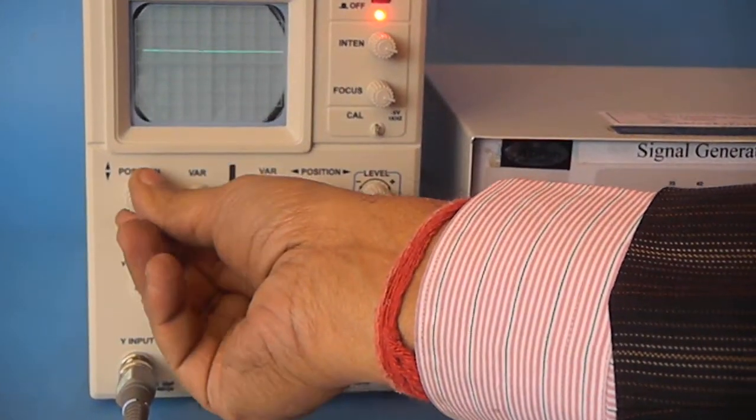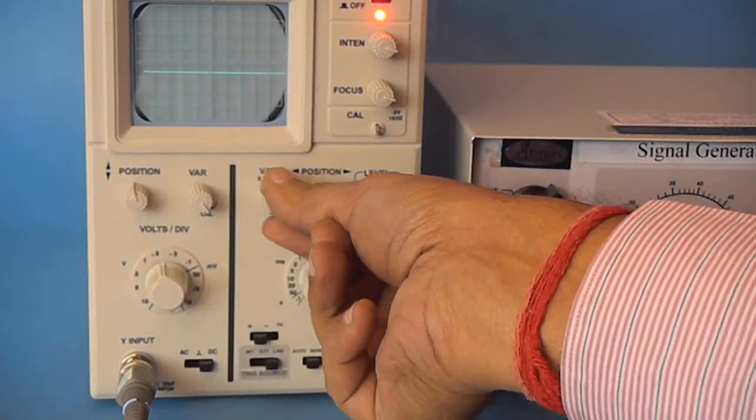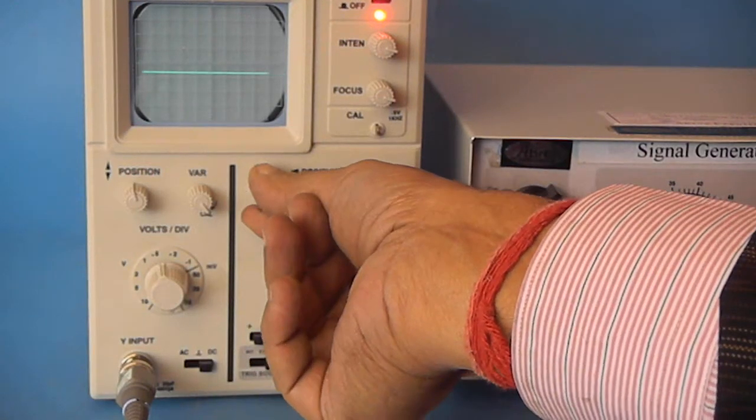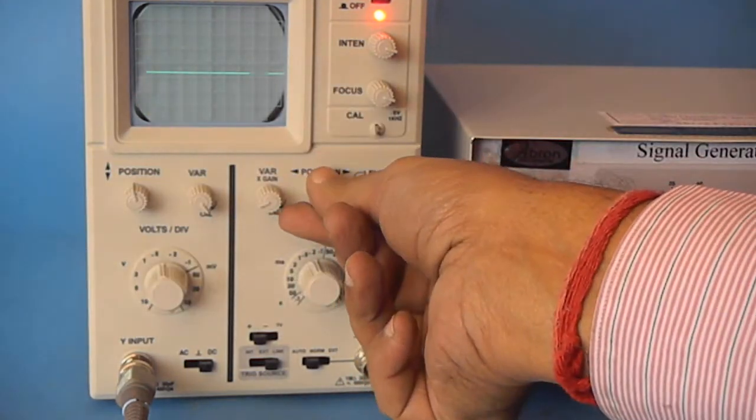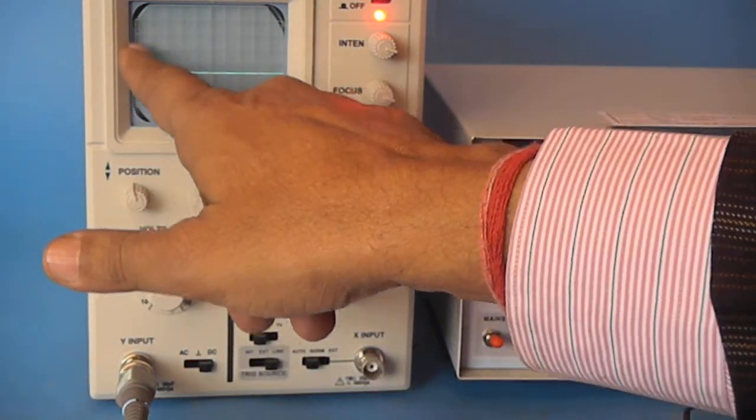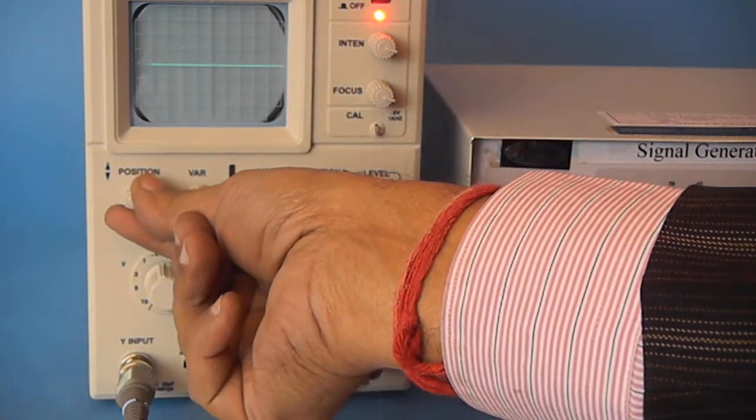And then position, this is position, you can move up and down. And there is a vernier which is here. You can increase the gain. This is for positioning of this. You can see corner coming here. First, it should start here and then in the center.